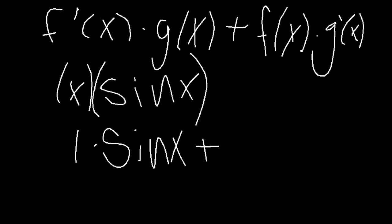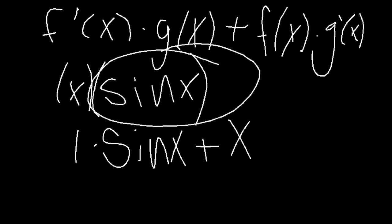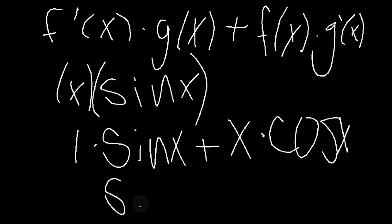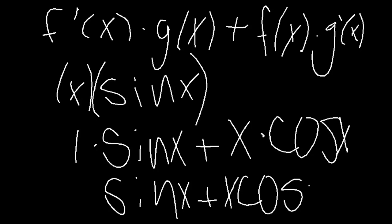How we did the derivative of the original function on the first part, we're not going to do the derivative for the original function on the second part — we just leave it alone. And how we did not do the derivative here, we're going to do the derivative on the second part. The derivative of sine of x is just cosine of x. So 1 times sine of x is just sine of x, plus x times cosine of x, which is x cosine of x. And that is our derivative.